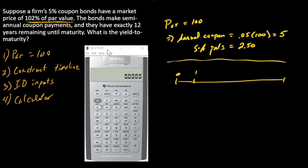Now let's go to a timeline. So our timeline, since it is a semi-annual bond, it's going to have 12 years times 2 equals 24 semi-annual periods, and for each one of those semi-annual periods we're going to have a coupon payment of $2.50, and then the full par value will be repaid at time 24.